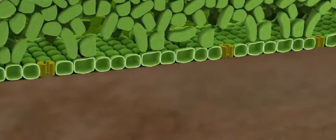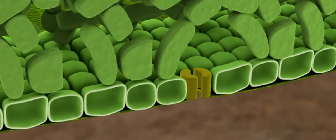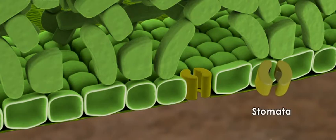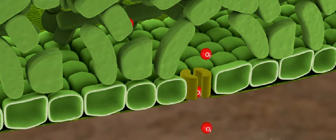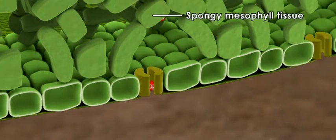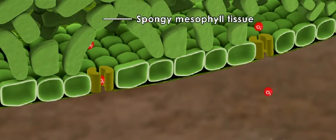Instead, the surfaces of leaves and stems are filled with minute pores known as stomata. Oxygen from the atmosphere is absorbed through the stomata before diffusing into the spongy mesophyll tissue.